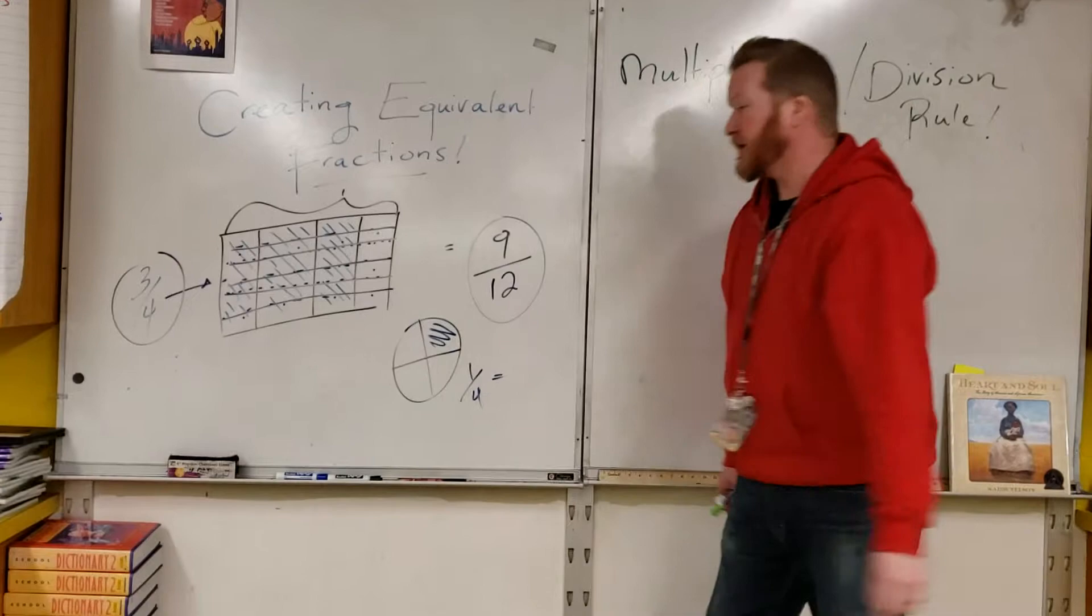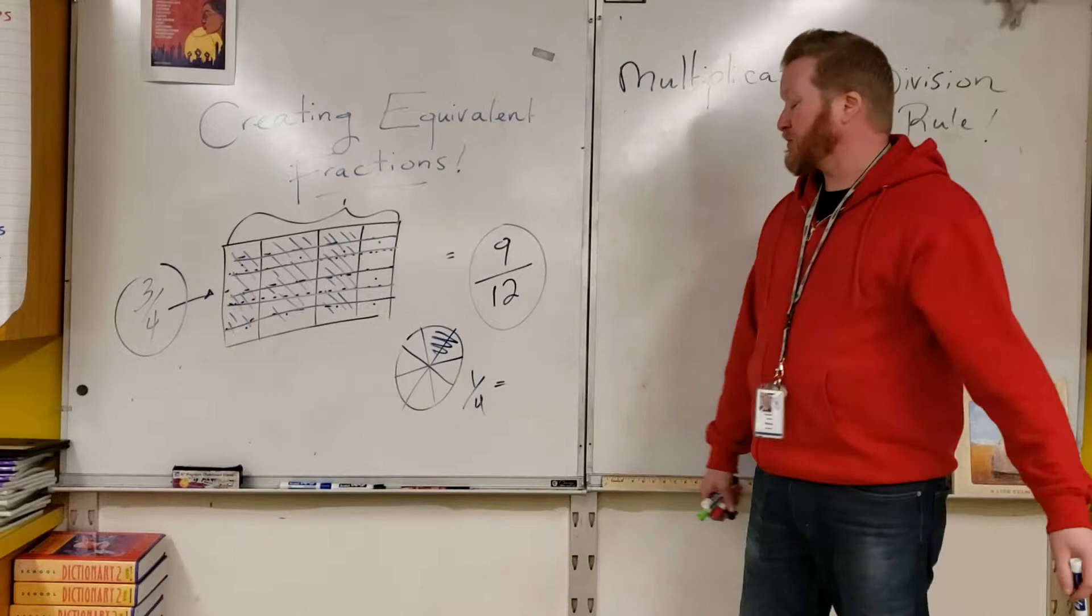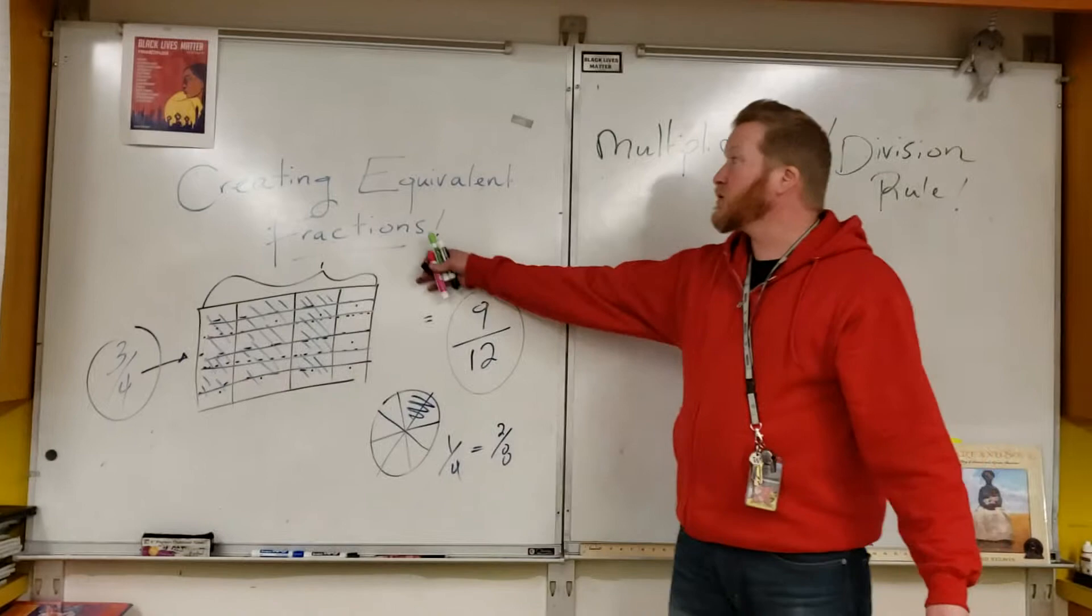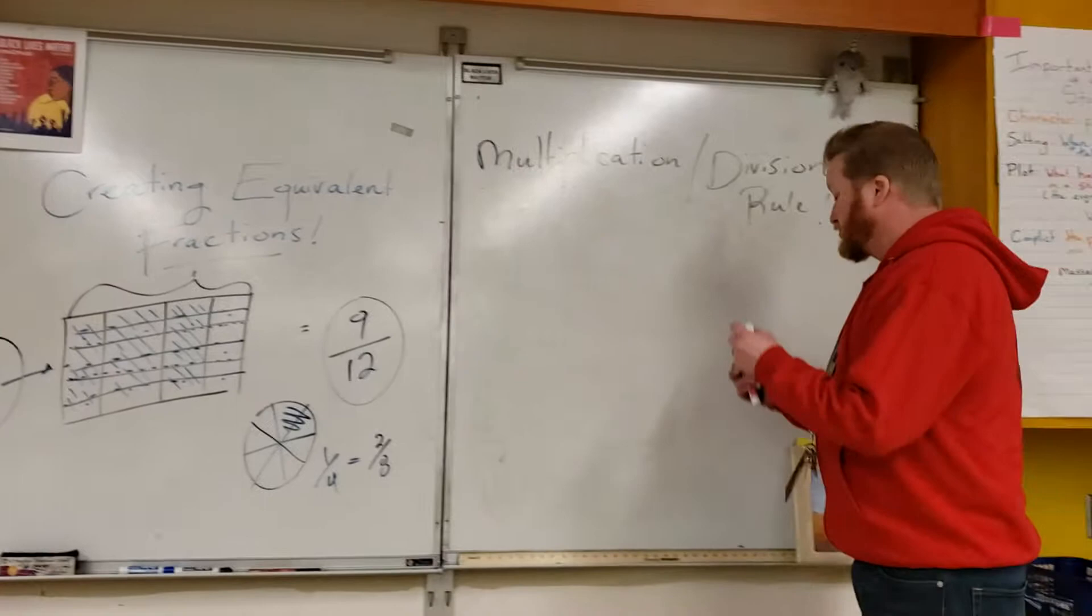If that is one-fourth, and I wanted to rename this as another equivalent fraction, as long as I'm cutting my parts equally, I have now turned this into two-eighths. That is one way to create an equivalent fraction, to divide your visual model.